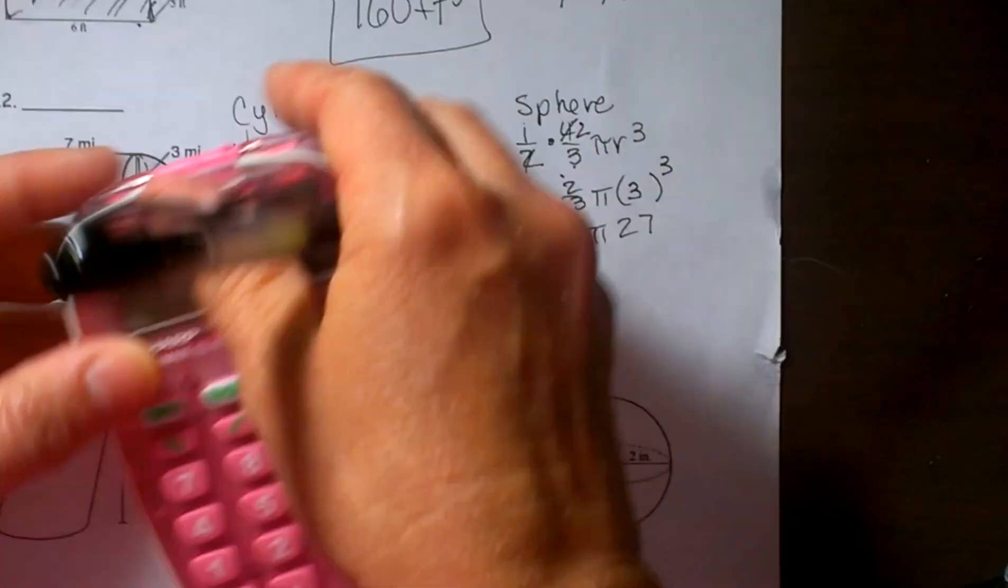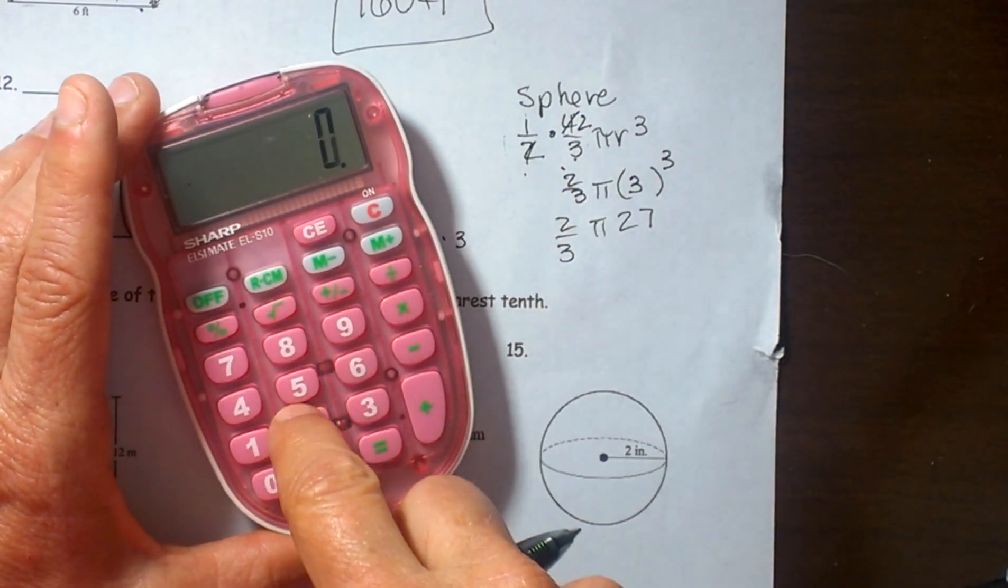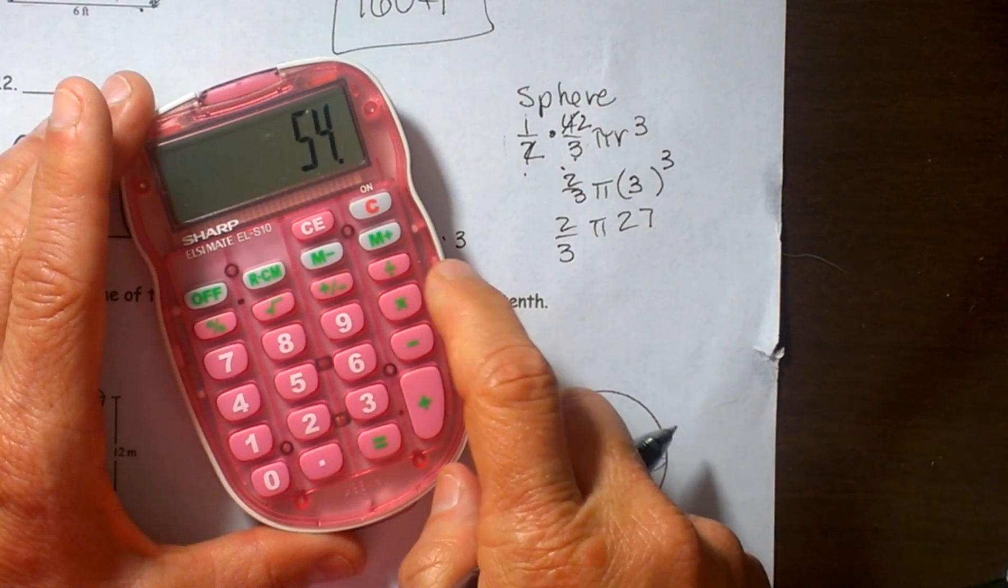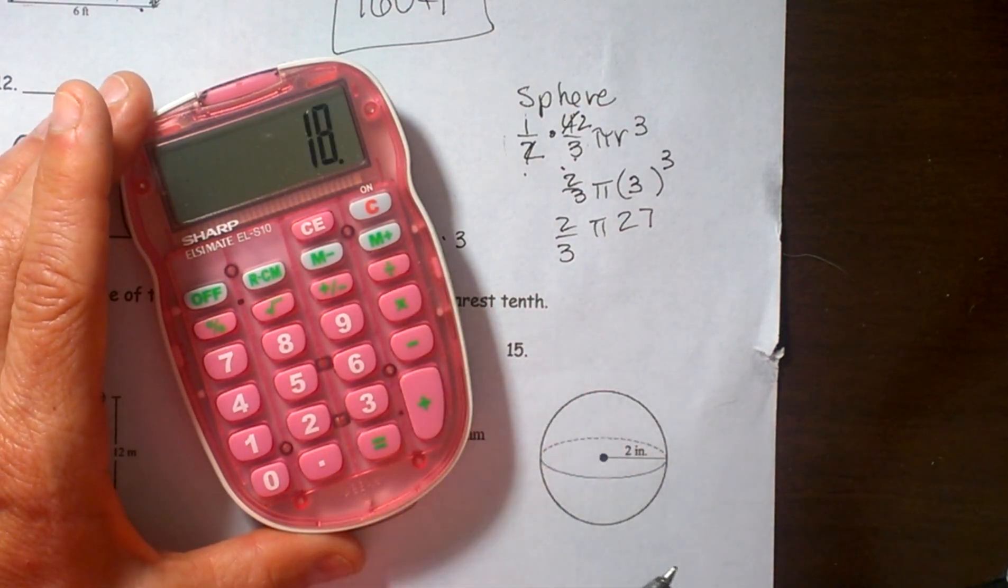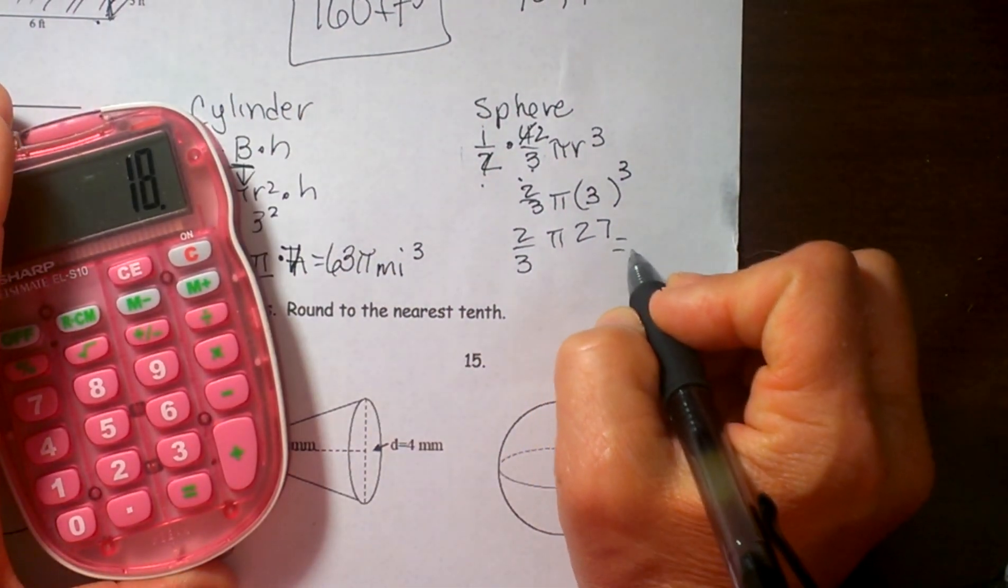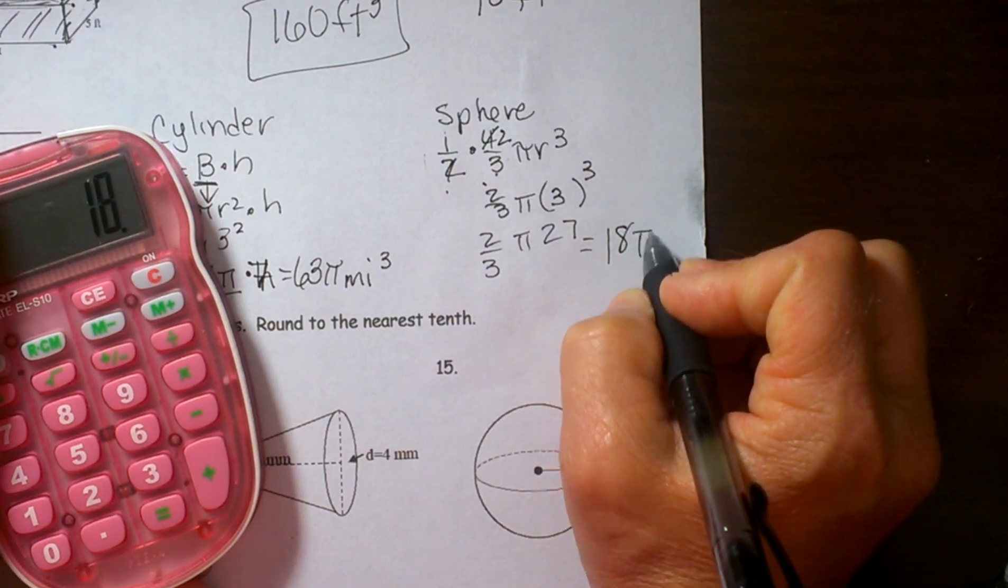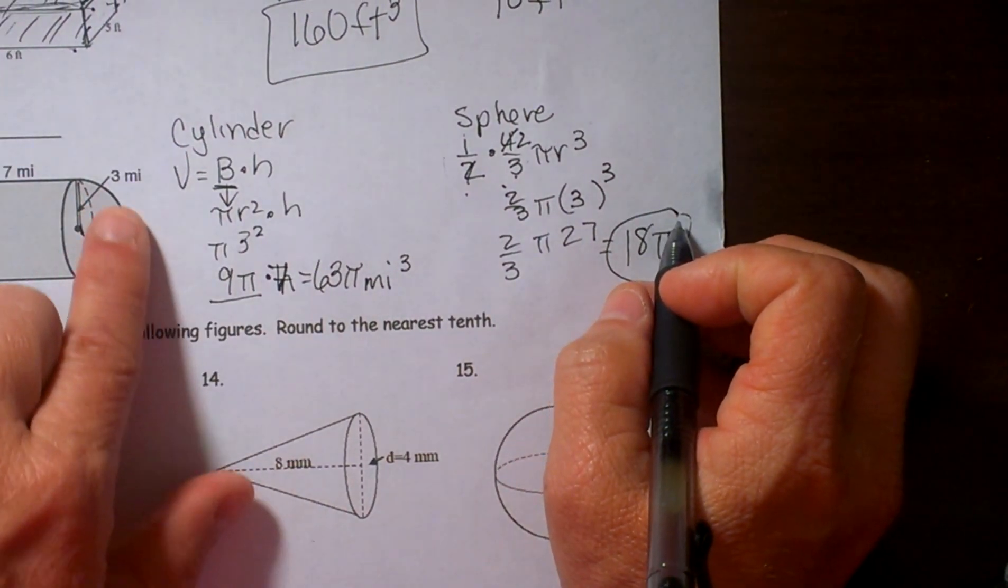So let's take our calculators. Take 27 times 2 that is 54 divided by 3 is 18. So this simplifies to 18 pi and that is the volume of this hemisphere.